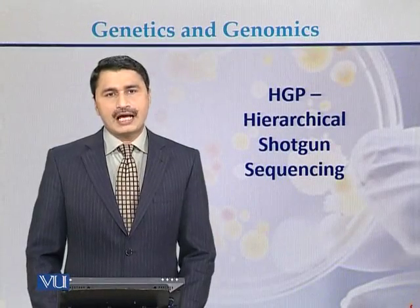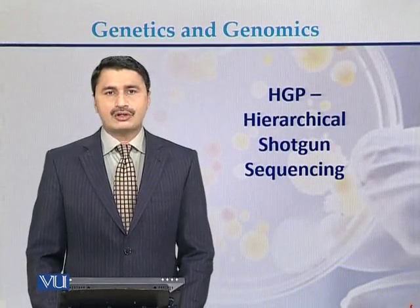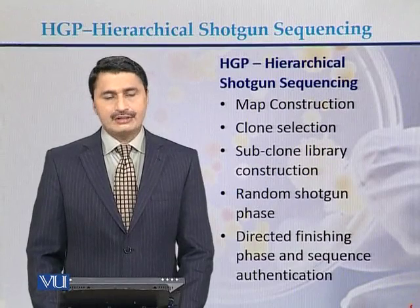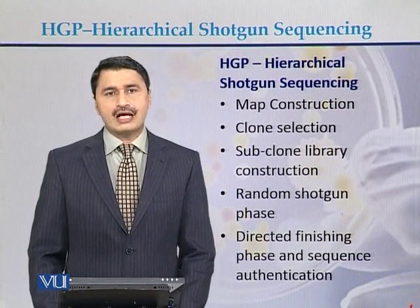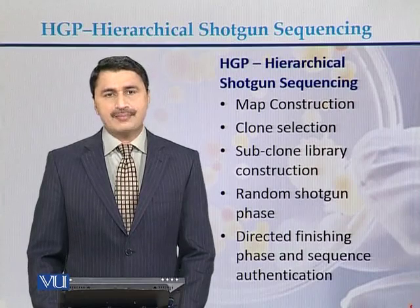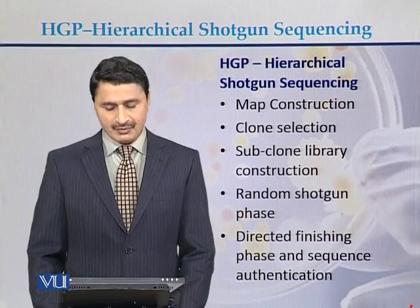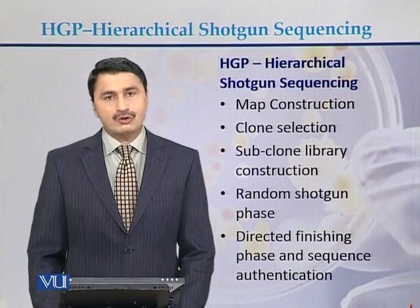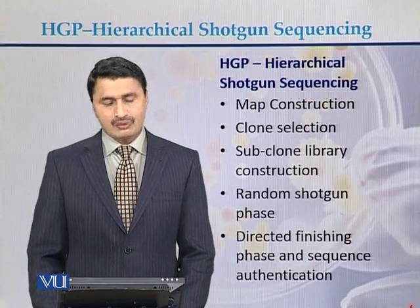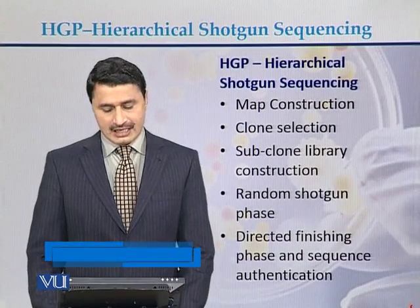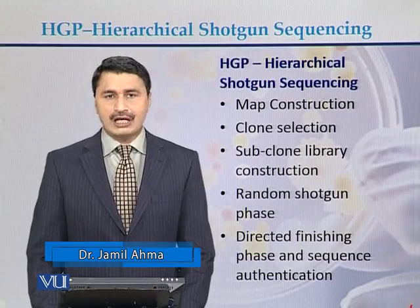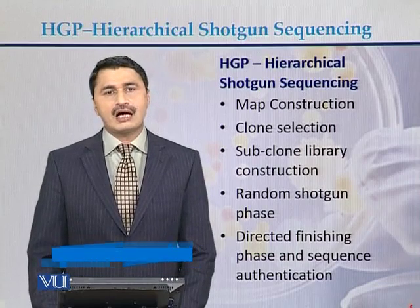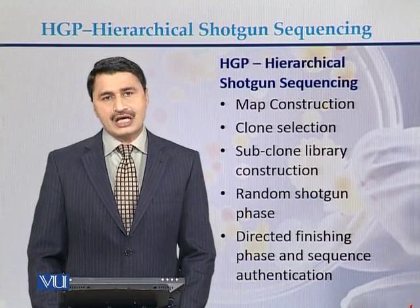Human Genome Project: Hierarchical Shotgun Sequencing. This was one of the strategies used to sequence the human genome. The main steps of this strategy were map construction, clone selection, subclone library construction, random shotgun sequencing, then a directed finishing phase, and sequence authentication. These were the main steps of this strategy.